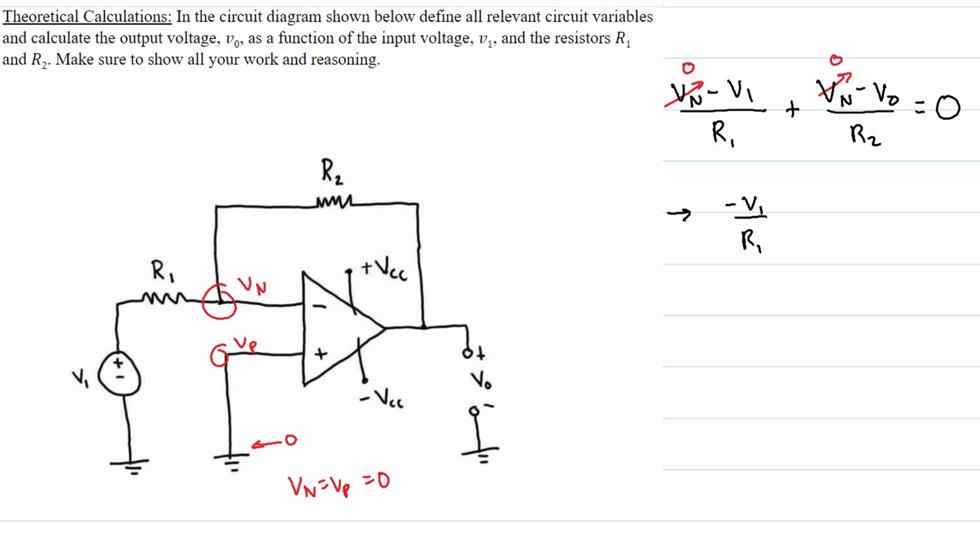We want to solve and calculate the output voltage V0. This means we want V0 by itself. So we're going to write this as V0 equals negative V1 times R2 divided by R1. And we have calculated for V0. If we had values, we could plug them in here and solve for this.